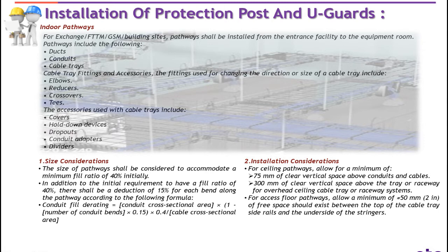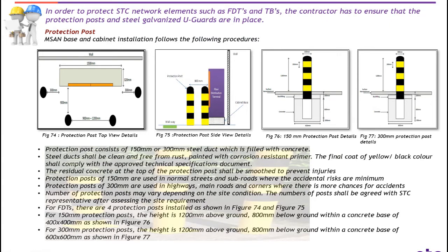Size considerations: the size of pathway shall be considered to accommodate a minimum fill ratio of 40% initially. In addition to the initial requirement of 40% fill ratio, there shall be a deduction of 50% for each bend along the pathway according to the formula: conduit fill rating = conduit cross-section area × (1 − number of contoured bends × 0.15) × 0.4 ÷ cable cross-section area. Installation considerations: allow a minimum of 75 mm of clear vertical space above goods doors and cables, and 300 mm of clear vertical space above the tray for overhead ceiling cable tray systems. For access floor pathways, allow a minimum of 50 mm of free space between the top of the cable tray side rails and the underside of the stringers.